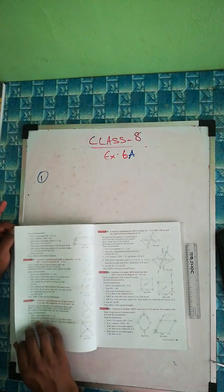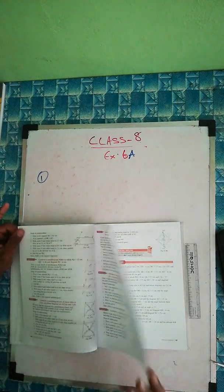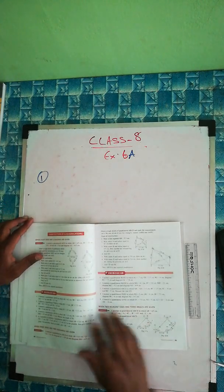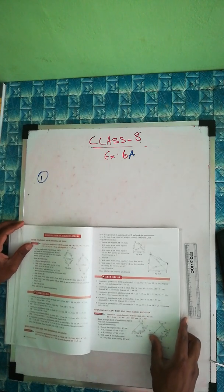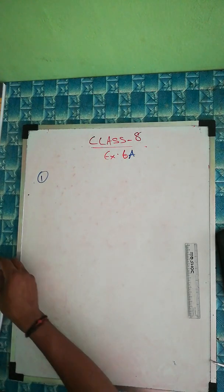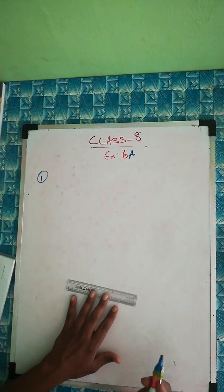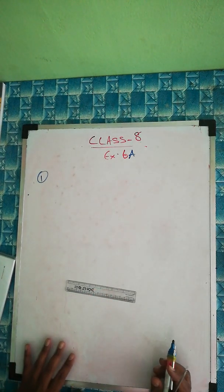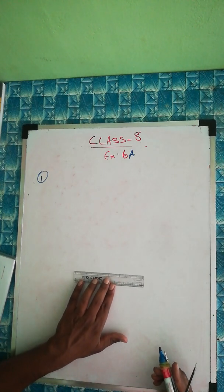We have six exercises: A, B, C, D, E, F. We'll do two questions from each exercise. So for the first one, construct a quadrilateral ABCD. We'll start by taking AB as 4.2 cm. I'm drawing approximately here, but when you do it, measure properly with your scale.